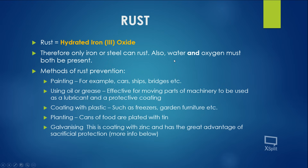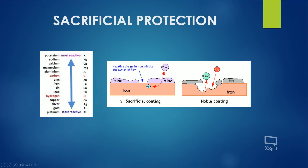A couple of methods of rust prevention involve offering a physical barrier so that the iron doesn't react with oxygen. Examples include painting, using oil or grease as a coating — which also acts as a lubricant for moving machinery parts — coating with plastic, and galvanizing. Galvanizing is important because it offers something called sacrificial protection.